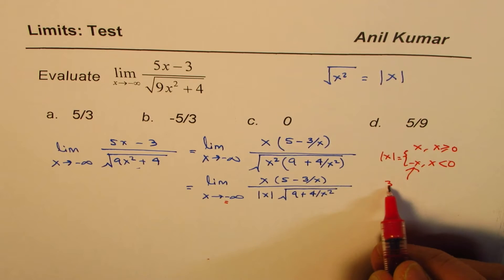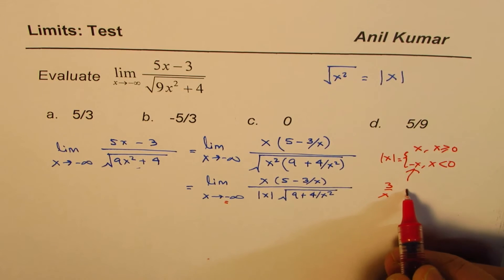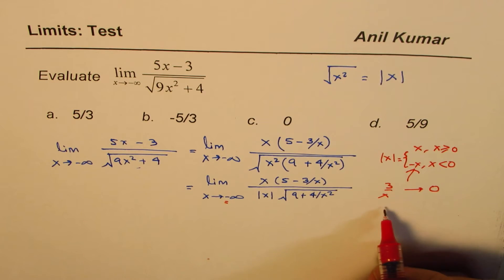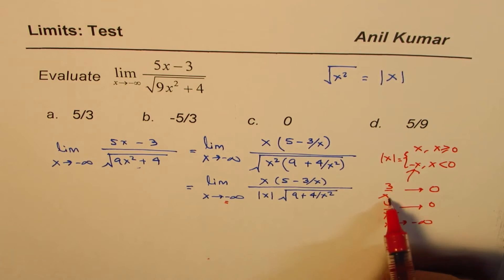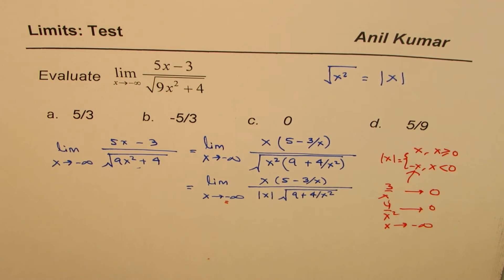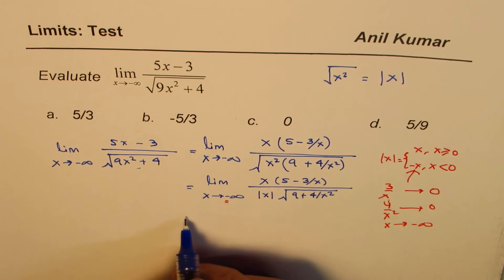Second, what will be the value of 3 over x? It will approach 0. And 4 over x square will also approach 0 as x approaches negative infinity. Dividing by a very large number will lead to 0. And therefore, we could write this whole thing as,